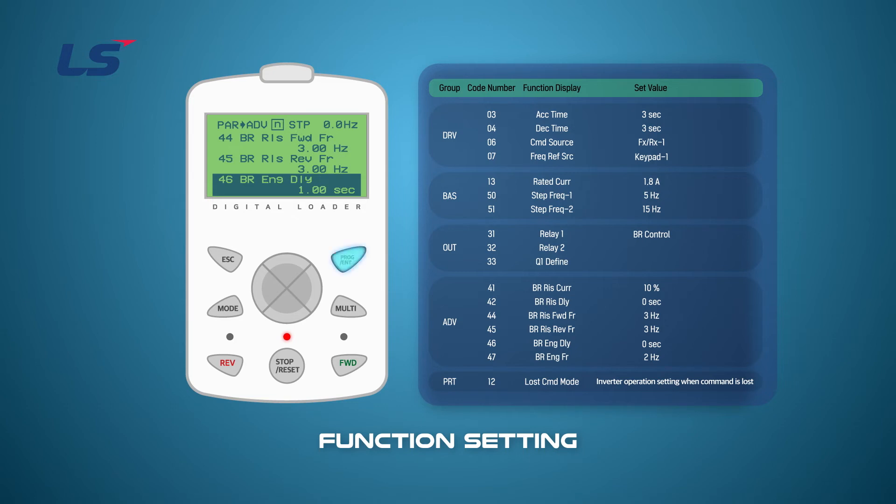In summary, the current is 0.18 amps when accelerating, the brake is open at 3 Hz, and the brake is closed when decelerating at 2 Hz.